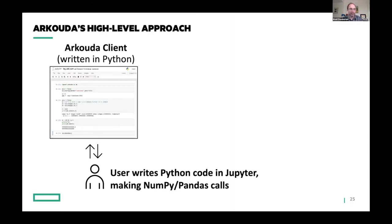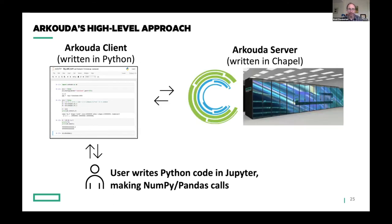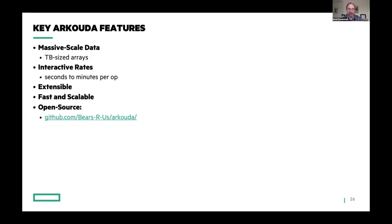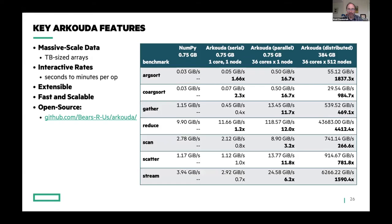Next I want to turn to Arkouda. If you're not familiar with it, Arkouda is essentially a Python library where you as a user write Python code — potentially in Jupyter — making what look like normal NumPy and Pandas calls. But where most high-performance Python libraries are written in C, Arkouda is written in Chapel. Under the covers, that Python library talks to a server running on potentially a supercomputer — or maybe just your laptop — that executes those commands and maintains the state of your large arrays.